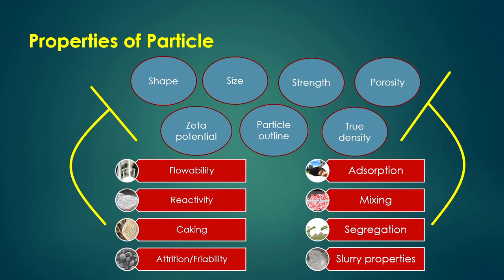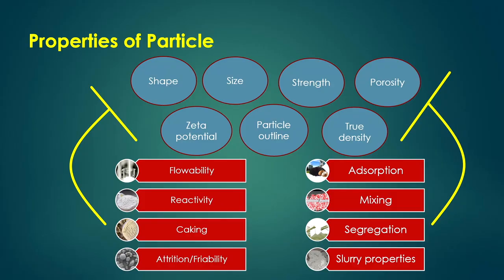These properties also affect caking. When particles deposit at the bottom of a container or are separated from a liquid-solid mixture (slurry) using a filter medium, they deposit on the surface of the filter medium forming a layer called cake. This formation of cake is called caking, and it depends on properties like shape, size, porosity, and true density.